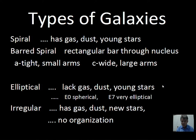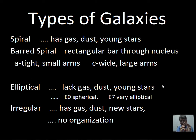We can classify the ellipticals based on their shape. If it's an E0, we're looking at a pretty much spherical collection of stars, and if it's an E7, it's very elliptical. There's room for confusion here because our viewpoint may cause an E3 elliptical to appear as an E0. If we're looking along the long axis of the galaxy — imagine holding a football — viewing the side shows its elliptical nature, but looking at the end gives a more spherical cross-section.